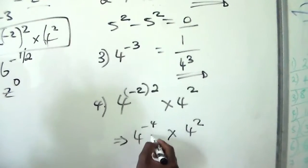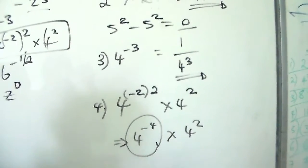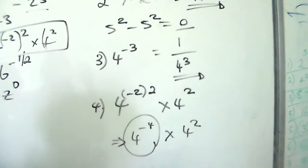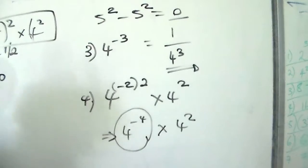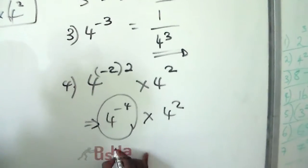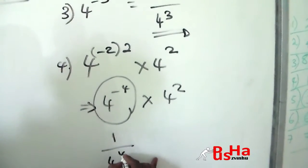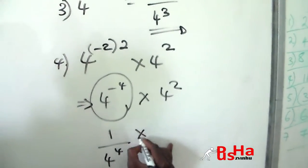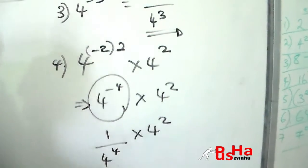We are going to deal with the negative exponent, which will change into an inverse of that number. So it will be one over four to the power of four, multiplied by four to the power of two.